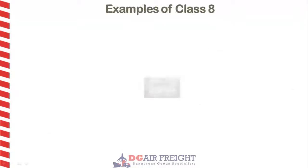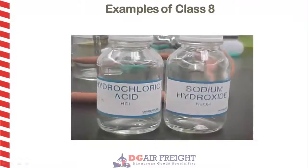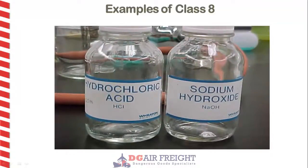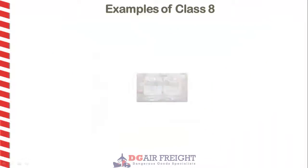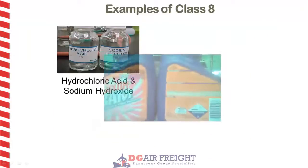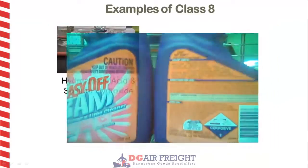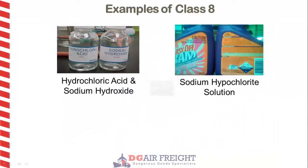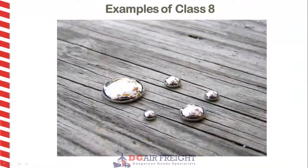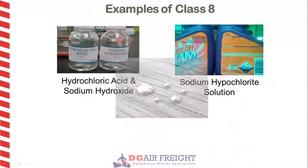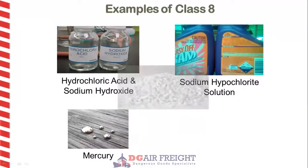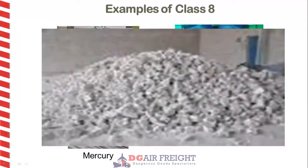Examples of corrosive substances include hydrochloric acid and sodium hydroxide, sodium hypochlorite, mercury, and quicklime.